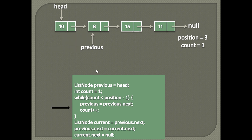As now previous points to the second node, we increase the value of count by 1. Again the while condition is checked. This time the value of count is 2, and 2 is not less than 2. Therefore the while loop condition fails and the loop terminates.